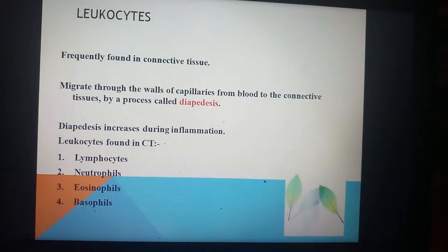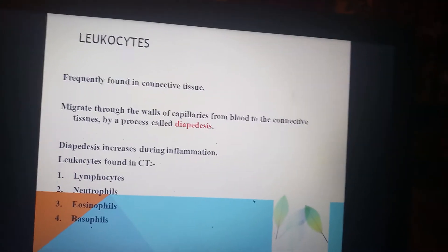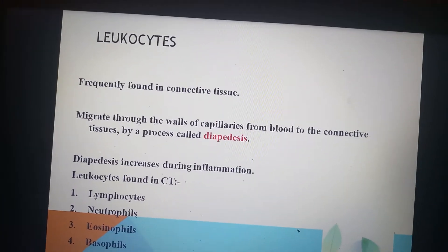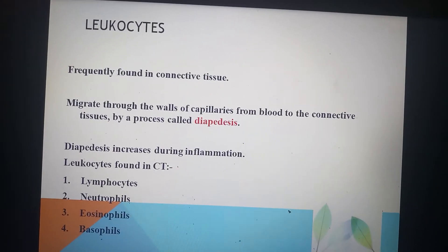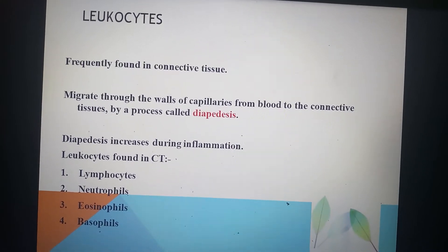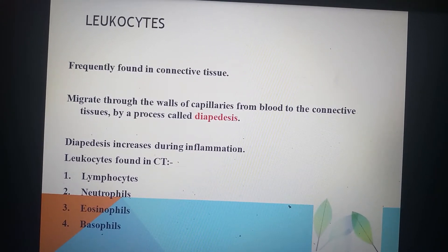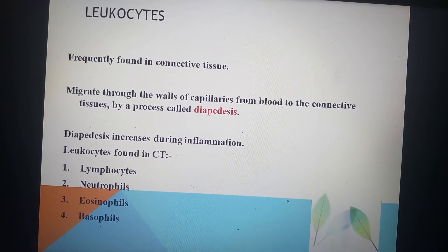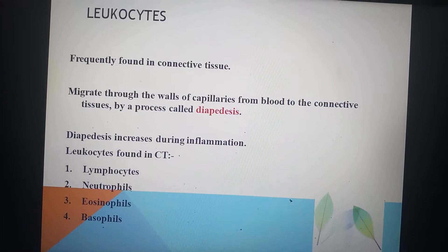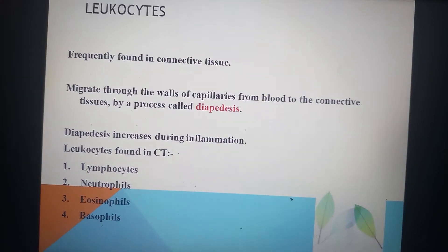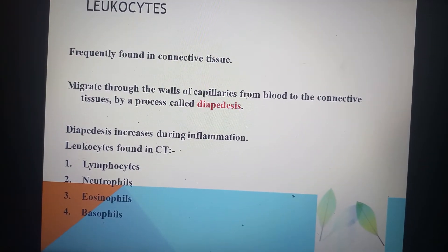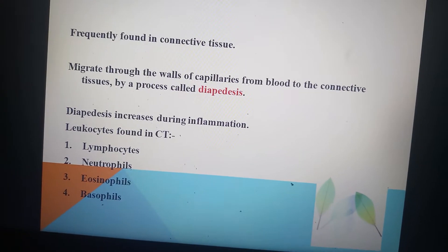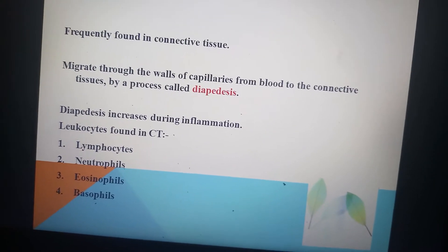Leucocytes are also found in connective tissue. They migrate through the walls of capillaries from blood to connective tissue by a process known as diapedesis. Diapedesis increases during inflammation. The leucocytes found in connective tissue include lymphocytes, neutrophils, eosinophils, and basophils — these are the various types found in connective tissue.